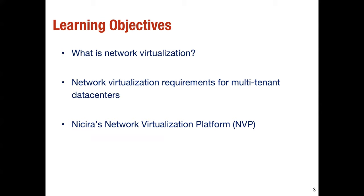Network virtualization is something we mentioned when discussing abstractions for software-defined networking — something called the specification abstraction, which makes it easier for programmers to specify what they want the network to do and focus on only portions of the network of interest. Network virtualization is one way of enabling that. We'll learn what exactly network virtualization means and what the network virtualization requirements are for multi-tenant data centers. Think about Amazon or Microsoft Azure as examples.